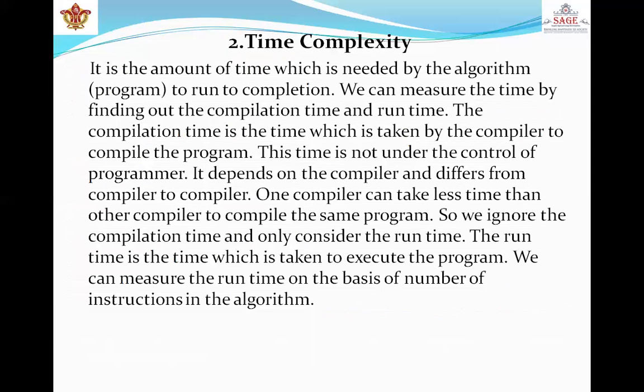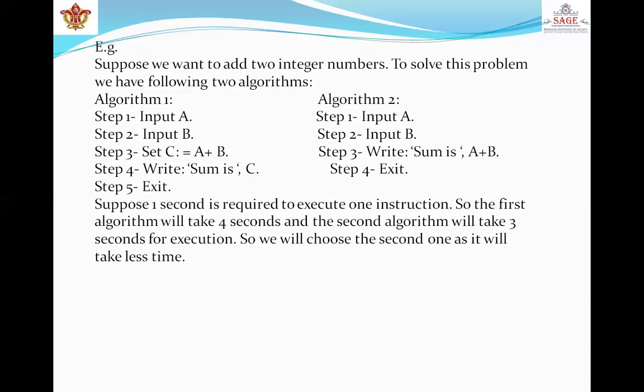Next is time complexity. Time complexity is the number of operations an algorithm performs to complete its task. Considering that each operation takes the same amount of time, the algorithm that performs the task in the smallest number of operations is considered the most efficient one in terms of time complexity. For any loop, we find out the runtime of the block inside them and multiply it by the number of times the program will repeat the loop. All loops that grow proportionally to the input size have a linear time complexity. For example, suppose we want to add two integer numbers to solve this problem: input a, input b, c equals a plus b, write sum c, then exit.